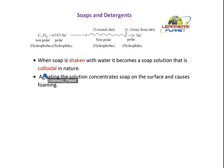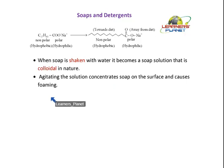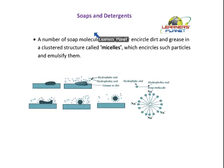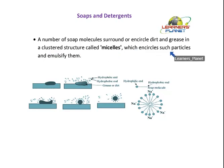So your soap solution becomes colloidal. Agitating the solution concentrates soap on the surface and causes foaming. You must have observed that when you agitate the soap solution, you get lots of foam on the surface. A number of soap molecules surround or encircle dirt and grease in a clustered structure called micelles, which encircle such particles and emulsify them.